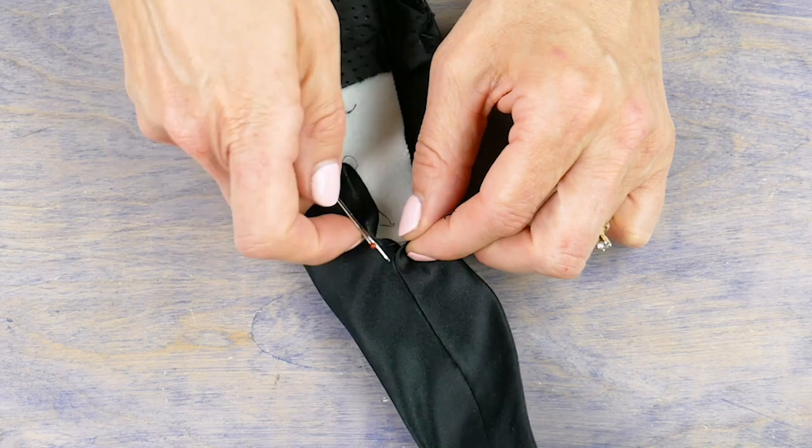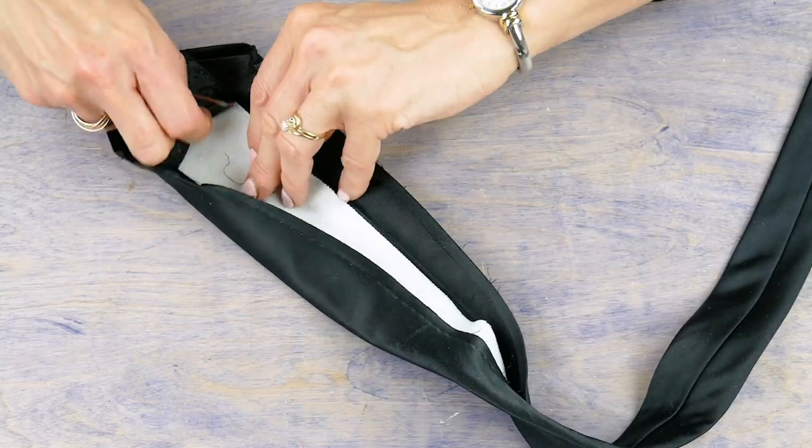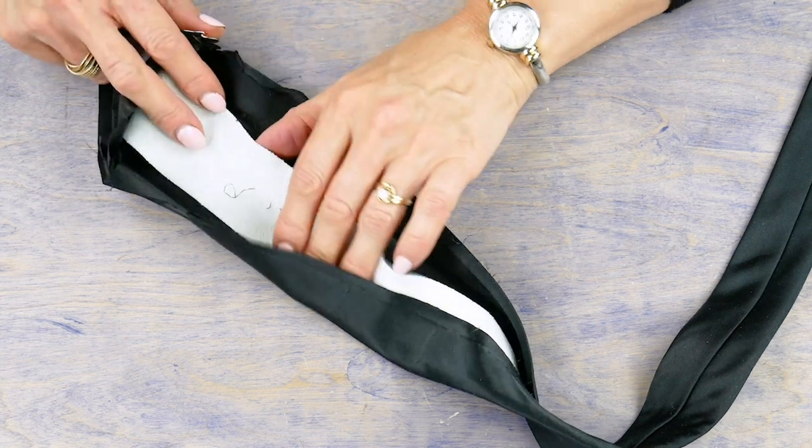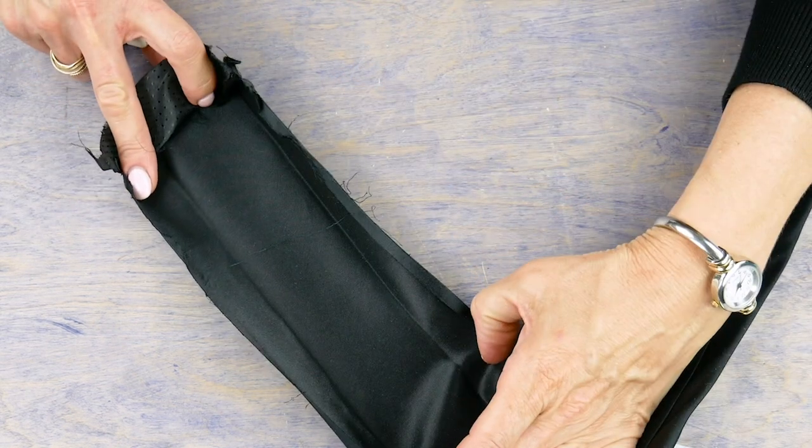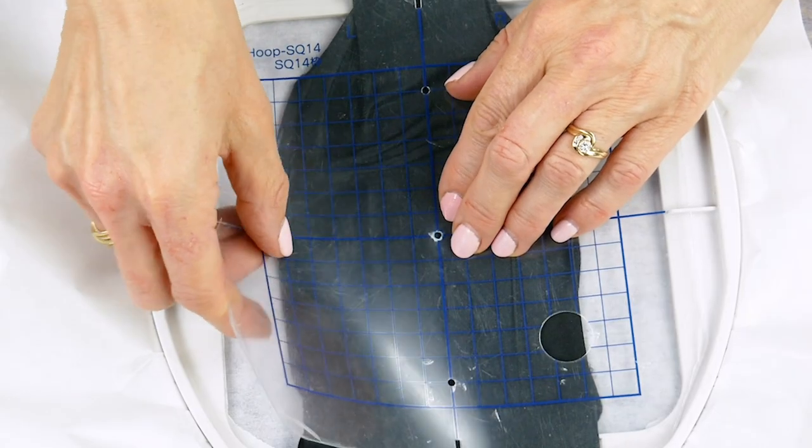Using your hoop grid, place the tie centered on the hoop and smooth and press it in place so it sits flat and even.